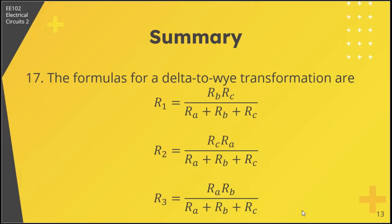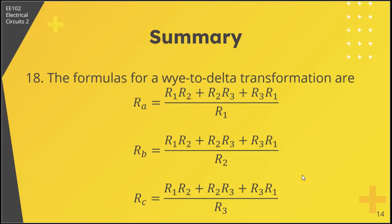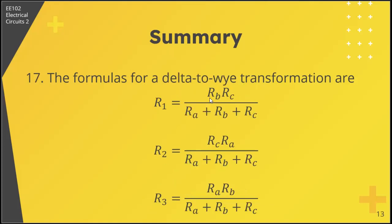Seventeenth, the formulas for delta-to-Y transformation are: you take the resistors in your delta two at a time, then add all three resistors in your delta. For delta to Y, you take the two adjacent sides, the two adjacent resistors to R1, that's Rb and Rc, over the sum of the three resistors in your delta.